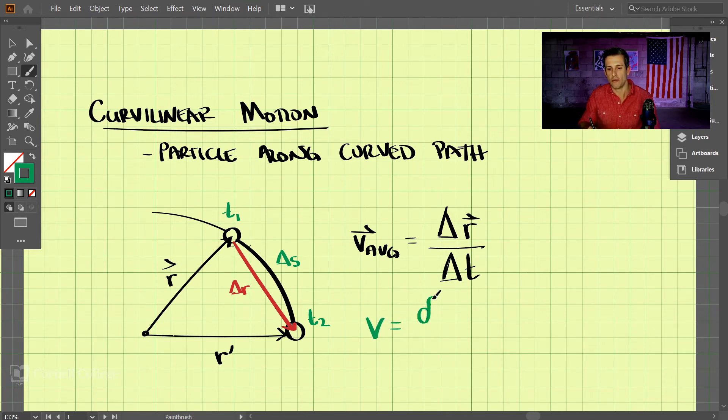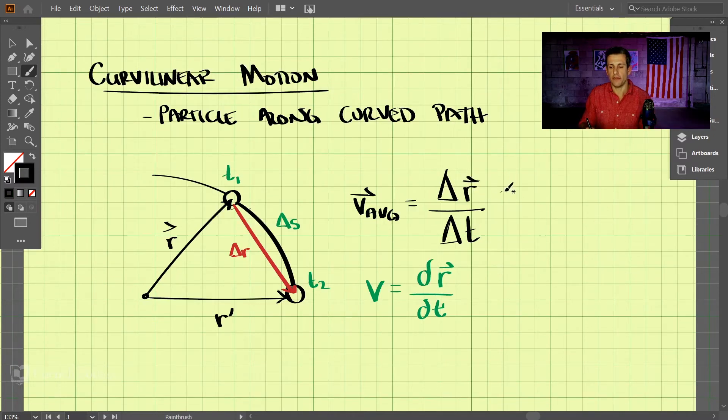we actually look for dr/dt. That's the derivative of the vector r with respect to t. Given a vector r, how do we find the velocity now?